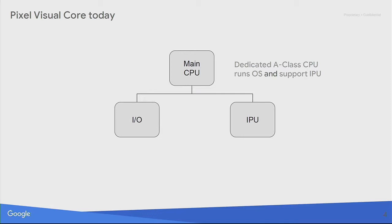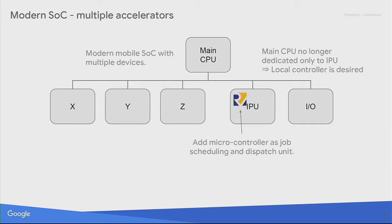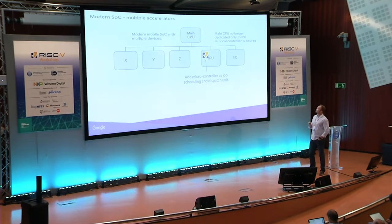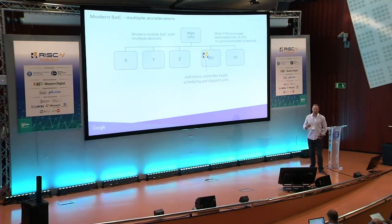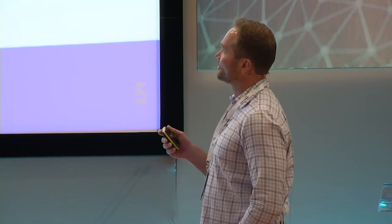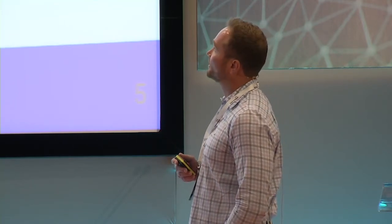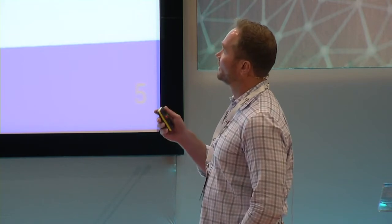If we move forward to a modern SOC, you're going to have multiple accelerators and multiple devices on the bus, and no longer is that main CPU dedicated to just configuring the IPU. So we need to add some level of local control. We're investigating adding a microcontroller as a job scheduling and dispatch unit — similar to what you see in GPUs, where a microcontroller is the outward-facing component as a slave on the bus and communicates through shared memory.